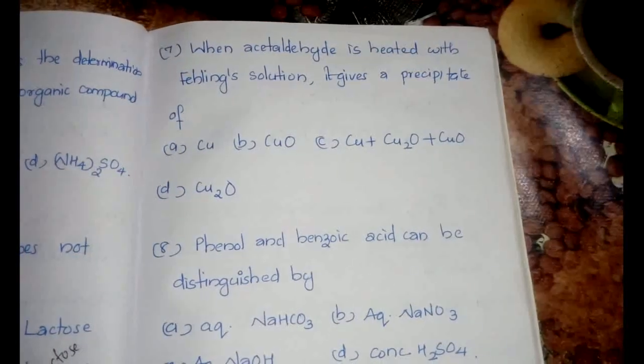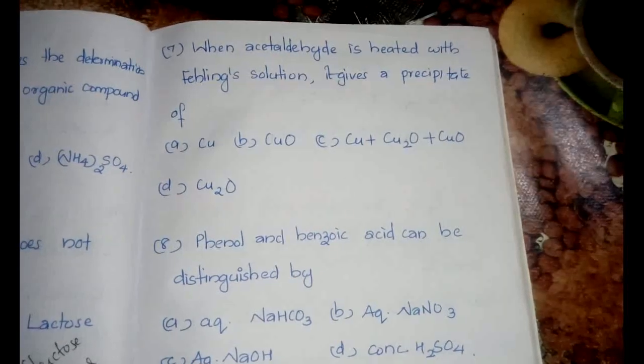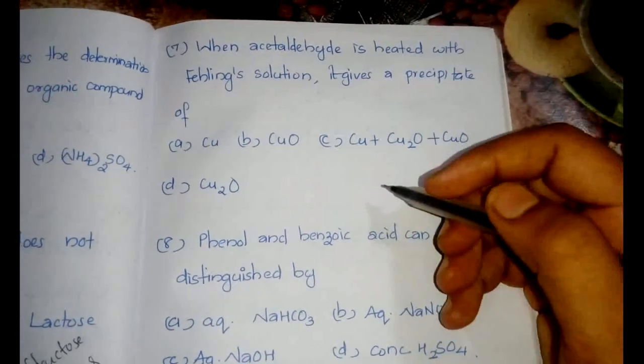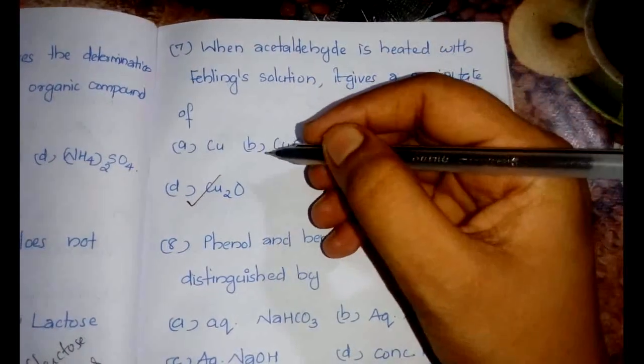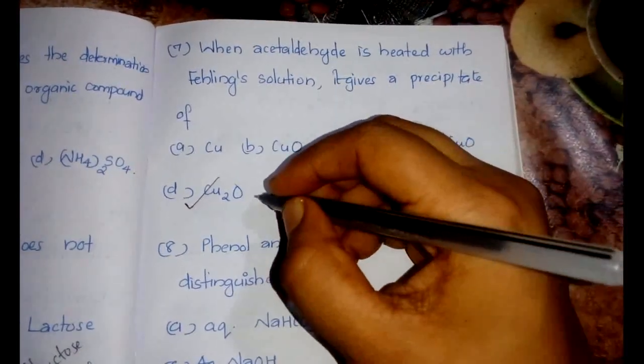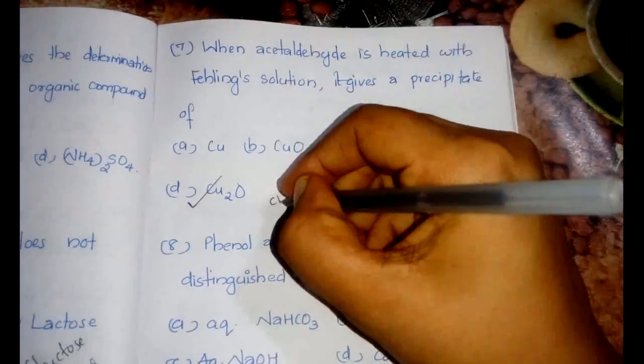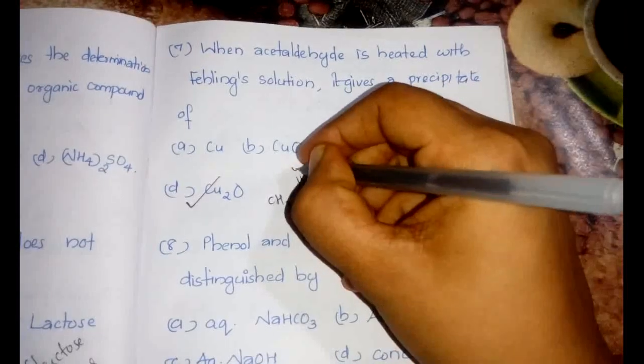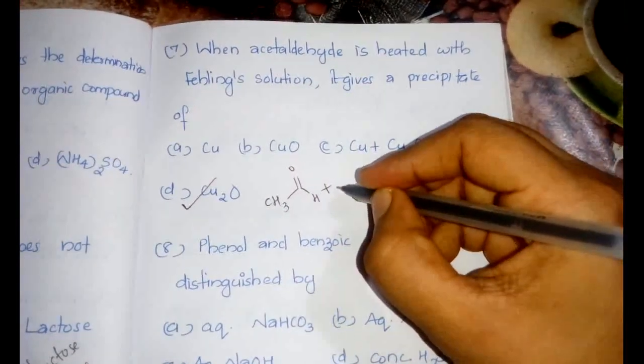The seventh question is: when acetaldehyde is treated with Fehling solution, it gives a precipitate of? The answer is option D, Cu2O. Let's see the equation because this is always important whether you are going to any other course, also in chemistry practicals this is always important.